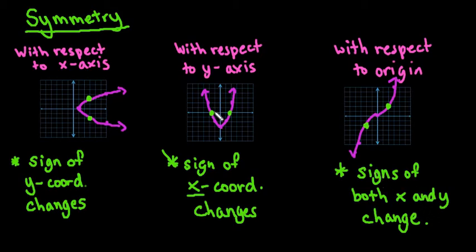It is possible for a graph to have symmetry but not be with respect to one of the axes or to the origin. But that is not a special type of symmetry that we test for.